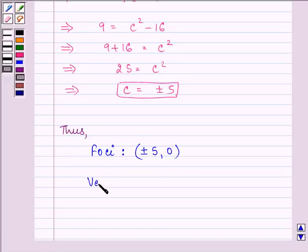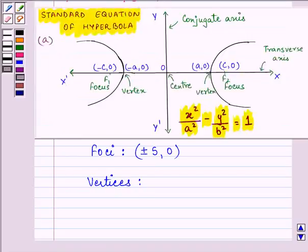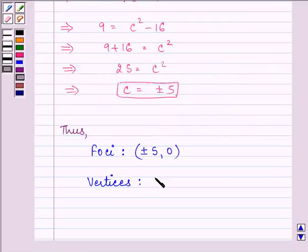Vertices are plus minus a, 0. And the value of a known to us is equal to 4.